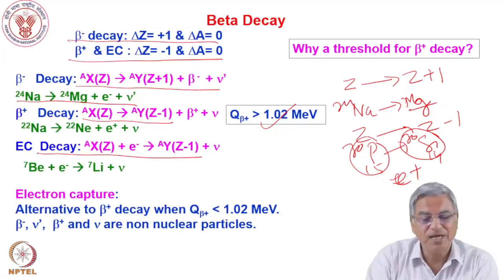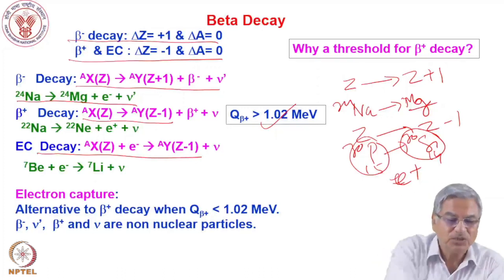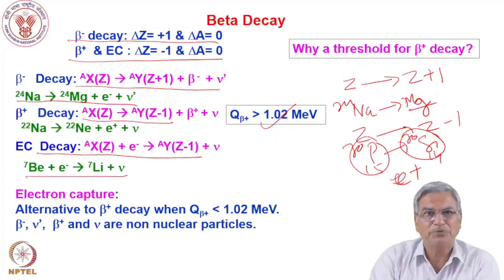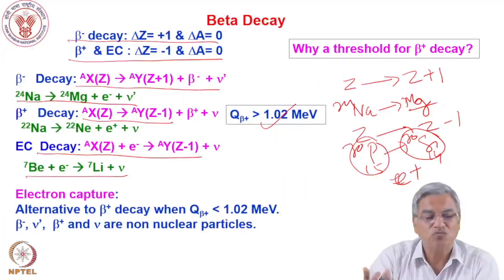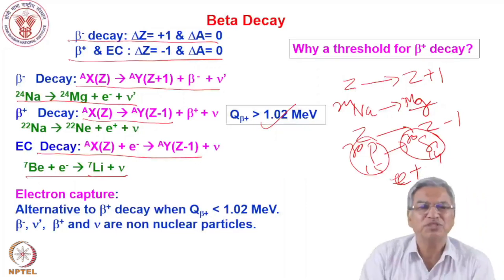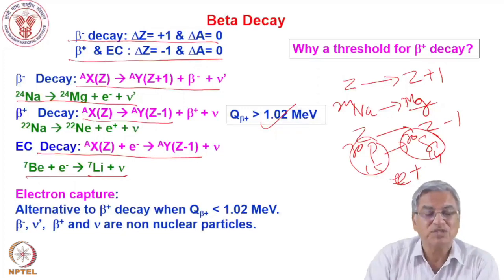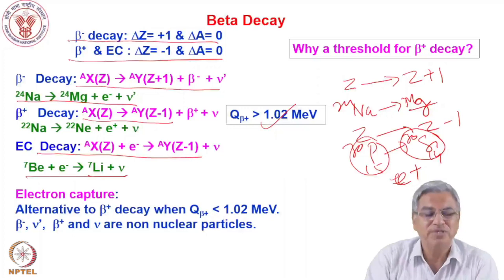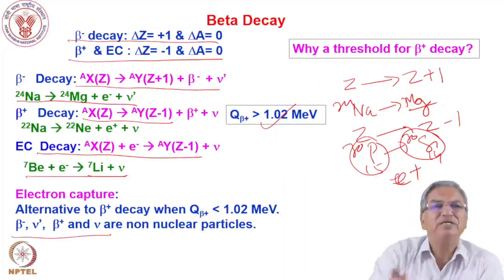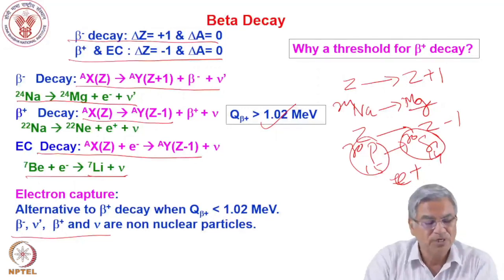When Q_beta is less than 1.02 MeV, electron capture is the mode of decay. Electron capture competes with beta plus decay when Q_beta is less than 1.02 MeV. For example, beryllium-7 undergoes electron capture — the nucleus captures an electron from the atomic orbitals, either a K or L electron depending on the Q value. The result is lithium-7 plus a neutrino. In this process no charged particles are emitted, but when beryllium captures the electron, lithium-7 has a hole in the K shell, leading to emission of X-rays and Auger electrons.